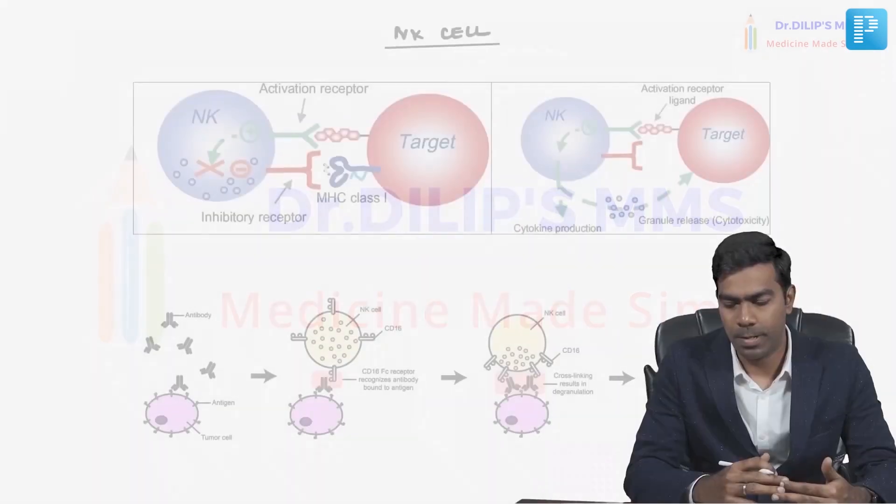In this video we are going to discuss the origin of natural killer cells, the mechanism of actions of natural killer cells, and the surface markers of natural killer cells, which is important for identifying NK cell neoplasms.